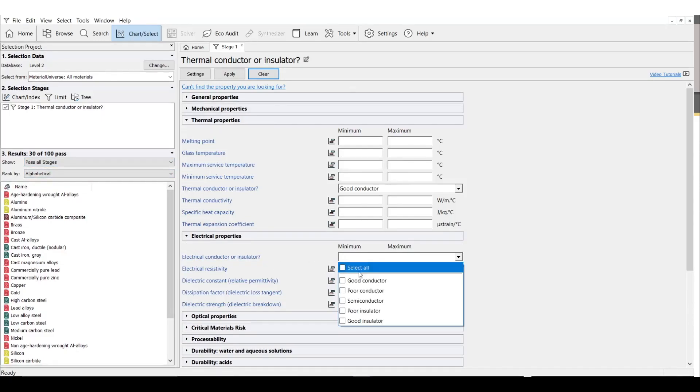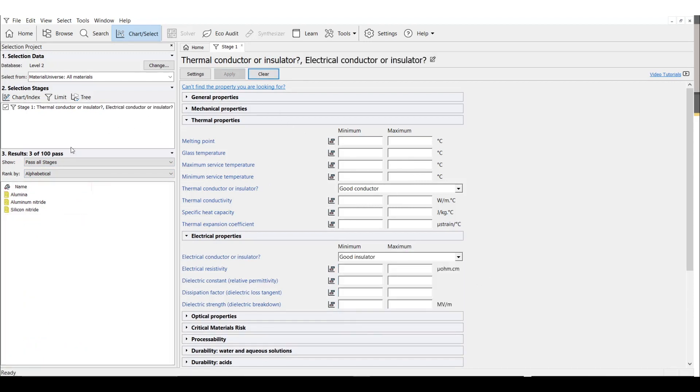Now we can apply our electrical insulator constraint. With this constraint, we drop to only three acceptable materials. These are actually a difficult set of constraints because the materials that are good thermal conductors, like metals, are often good electrical conductors.